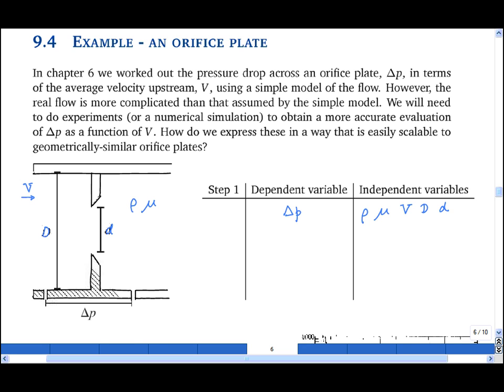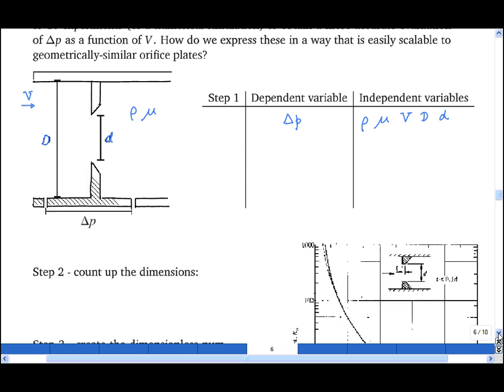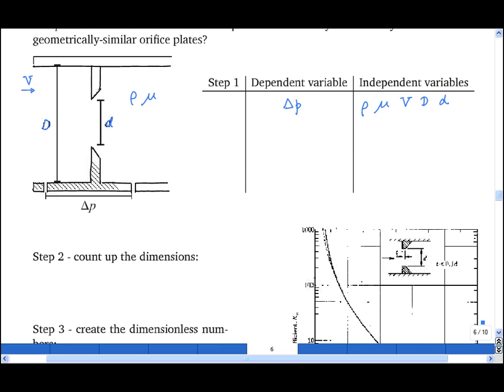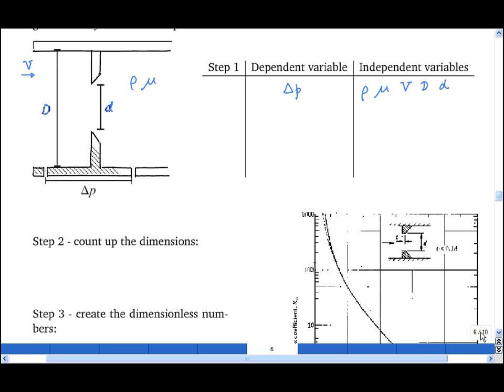Step 2 is to count up the number of variables and the number of dimensions. The number of variables is 6. The number of dimensions is 3, because I have meters, seconds, and kilograms. That means I'm expecting three dimensionless numbers.